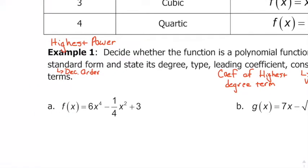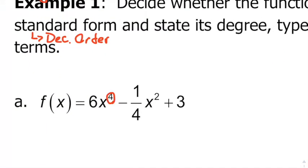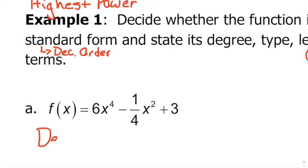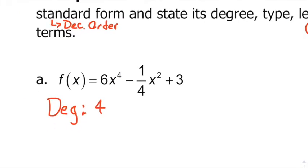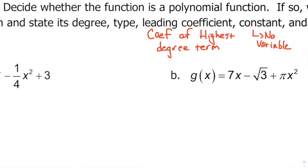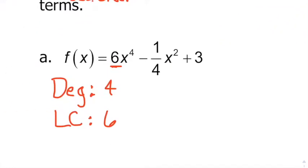Looking at this first one — write it in standard form. It's already in descending order. You're looking at your powers: you start with four, go down to two, and the last one doesn't have a power. So it's already in descending order. The degree is the highest power, so the degree here is 4. The leading coefficient is the number out in front of that term, so that's 6. The constant — the piece with no variable — is positive 3.